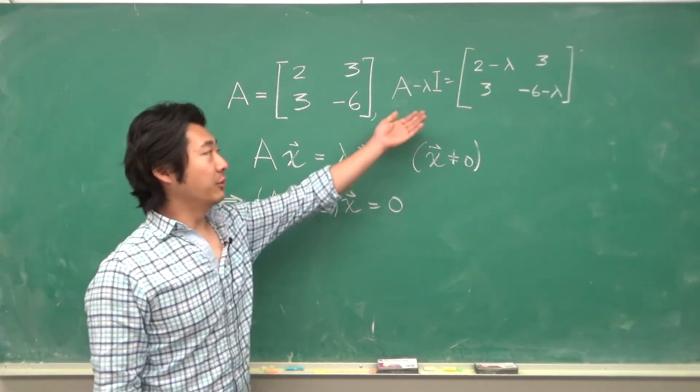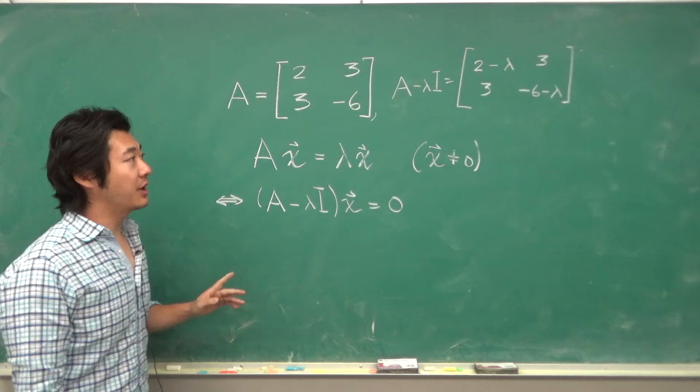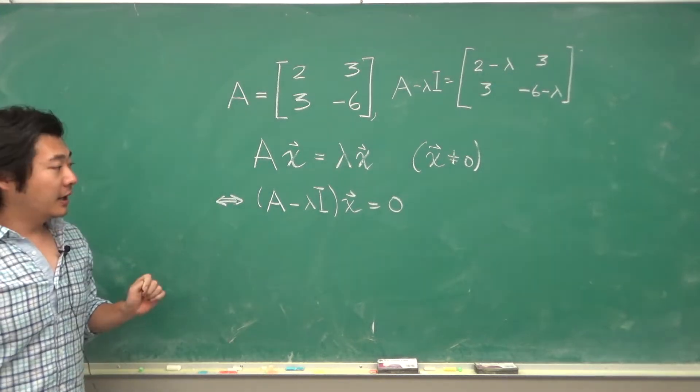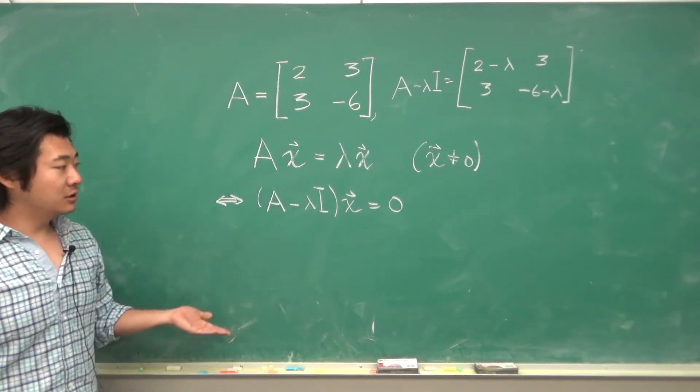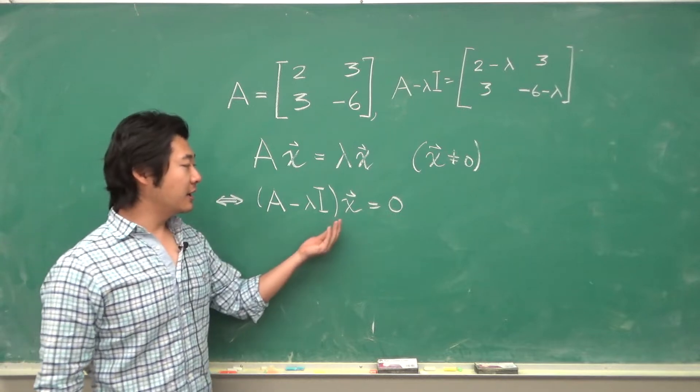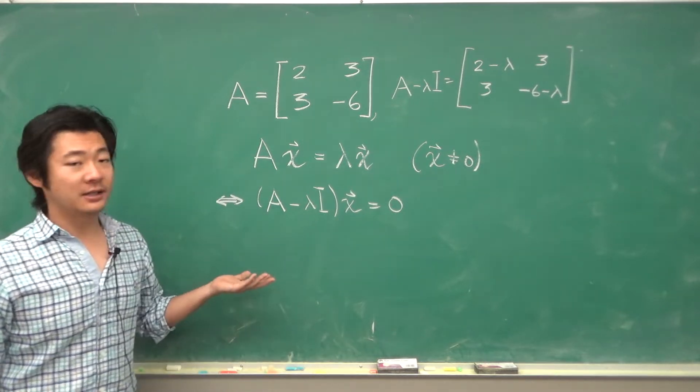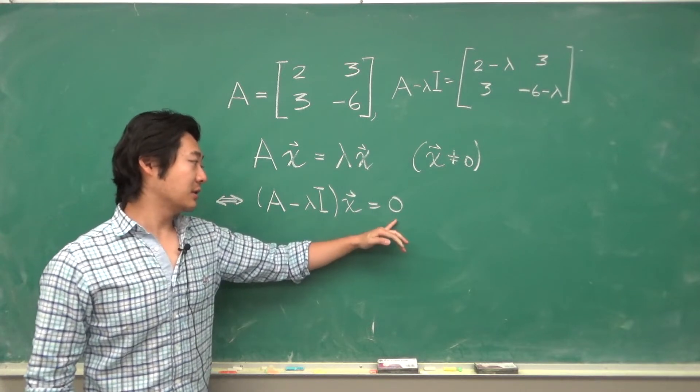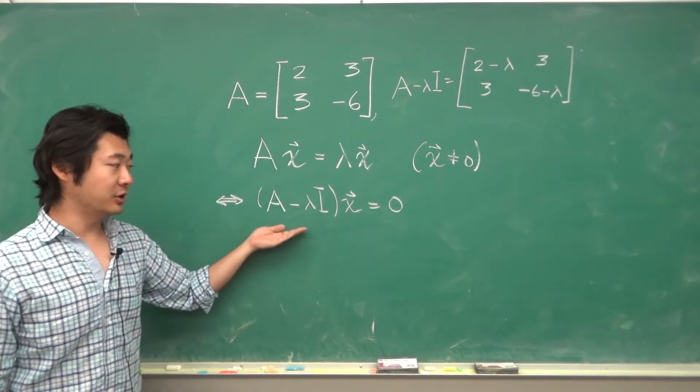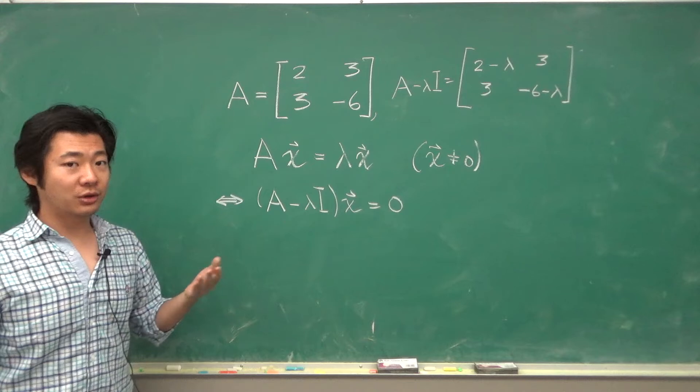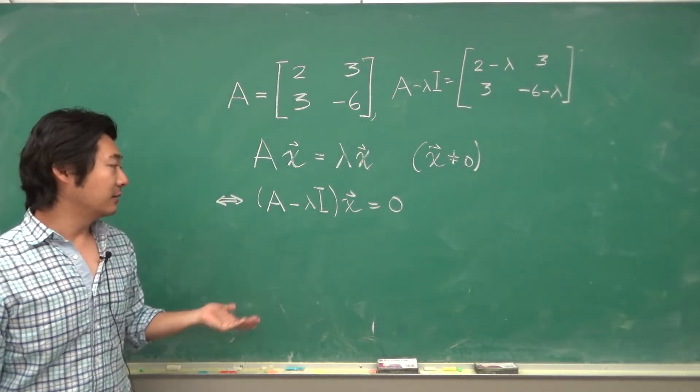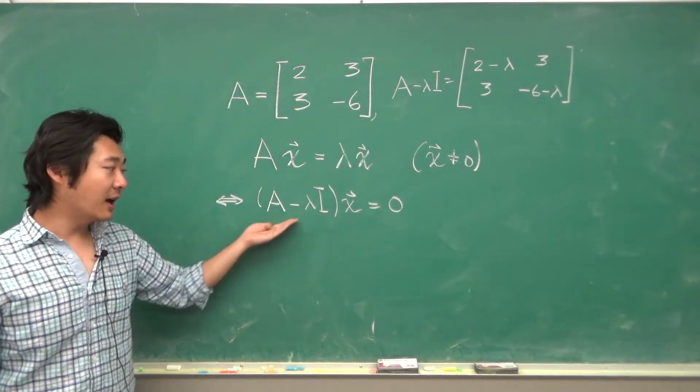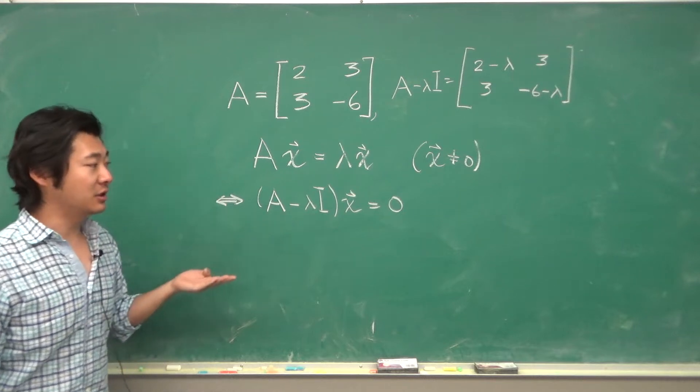So A minus lambda I will be this matrix here where you subtract lambdas from the diagonal. And what are the conditions so that such a vector x can even exist? A non-zero vector. Now x equals 0 is a solution to this homogeneous equation but in order to get more than that, well A minus lambda I has to satisfy certain conditions.